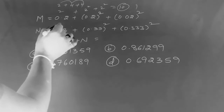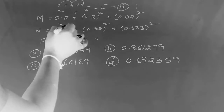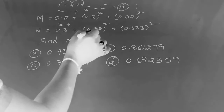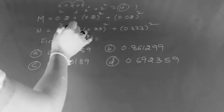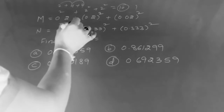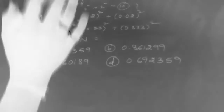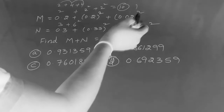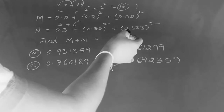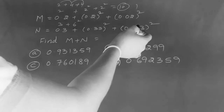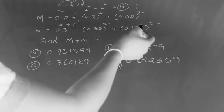0 plus 3 is nothing but 3. 0 plus 3 plus 3 is nothing but 6. 6 is square. Square is square. Here is 0 plus 3 plus 3 is 6. 6 plus 3 is 9.